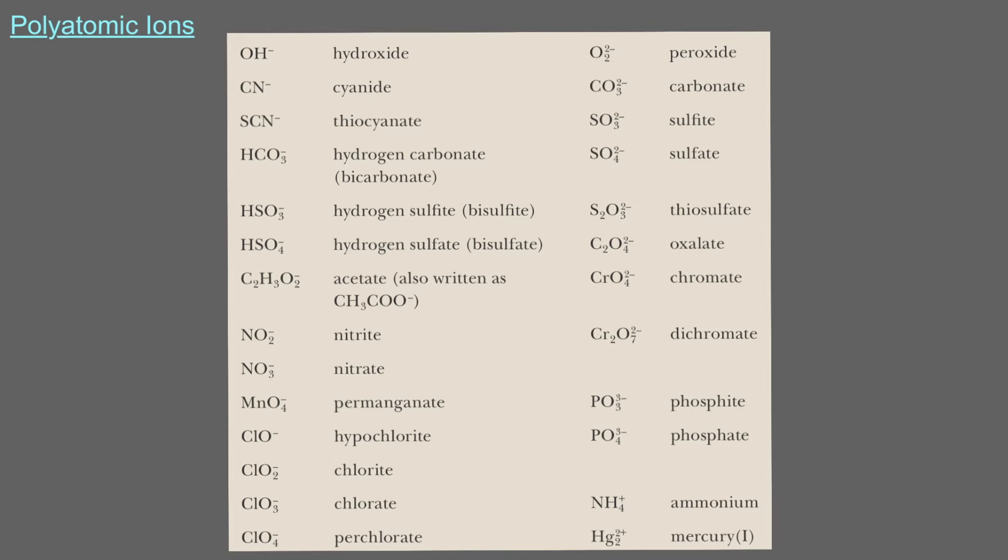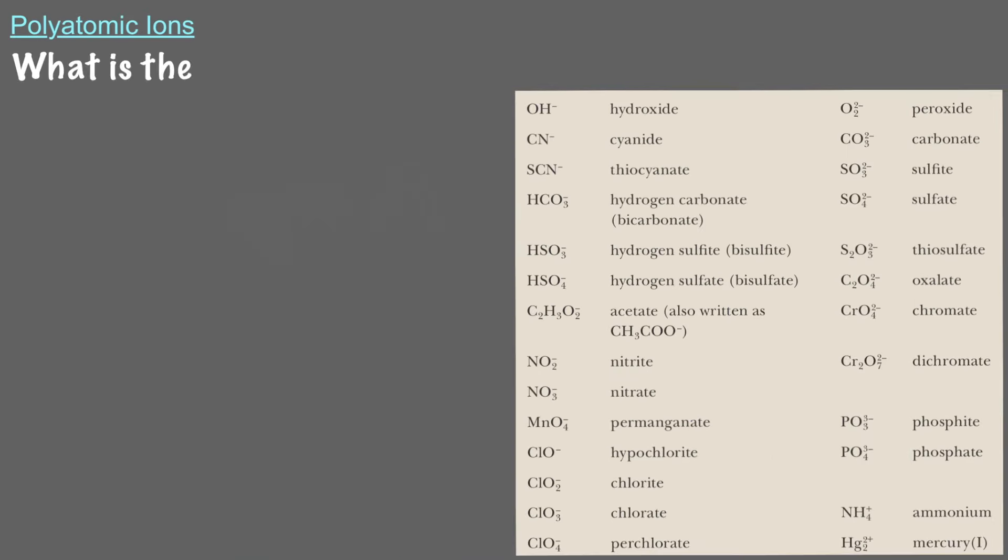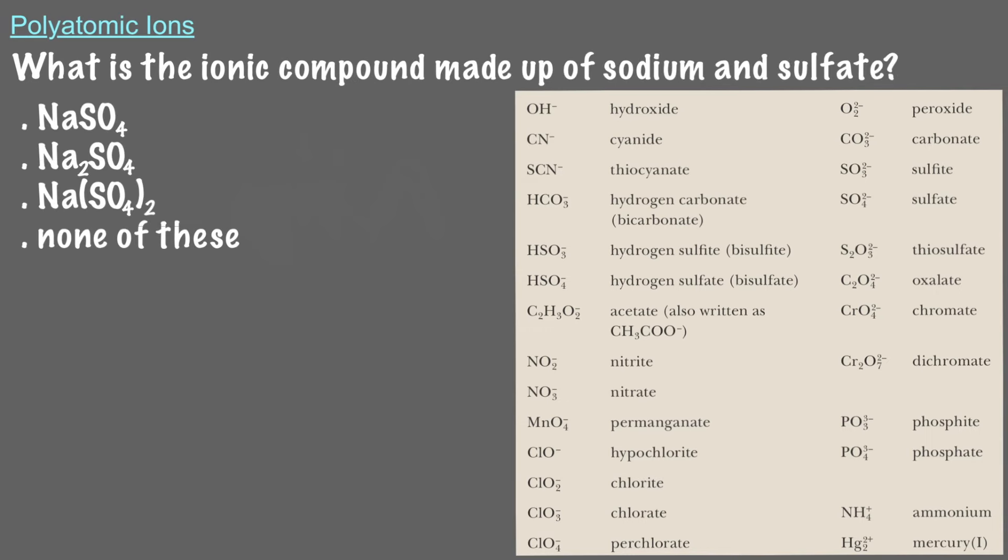Let's try some examples with a few different ones. What is the ionic compound made up of sodium and sulfate? Exactly, since sodium is an alkali metal, it makes a cation with a positive 1 charge.